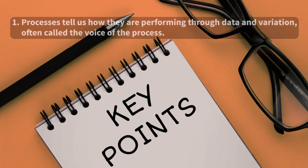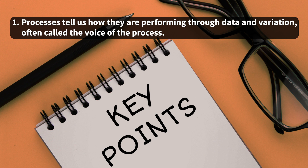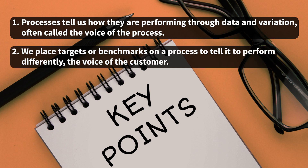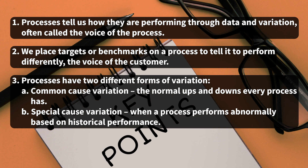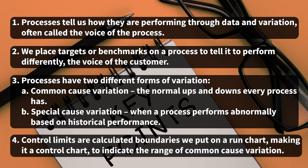Many common spreadsheet tools can calculate control limits for you. They represent the variation between or within points across a designated time frame, capturing a range where we can confidently say the process will perform. Key learnings so far: first, processes tell us how they are performing through data and variation — the voice of the process. Second, we place targets or benchmarks on a process to tell it to perform differently — the voice of the customer. Third, processes have common cause variation and special cause variation. Control limits are calculated boundaries we put on a run chart, making it a control chart.